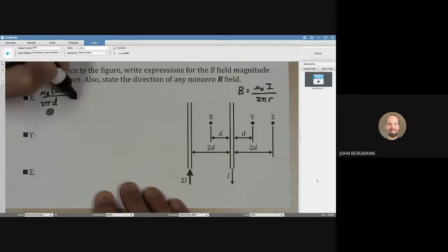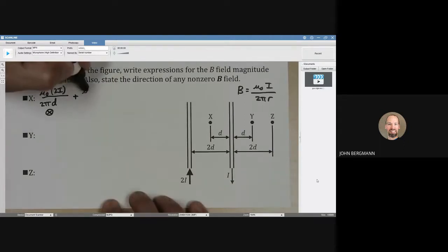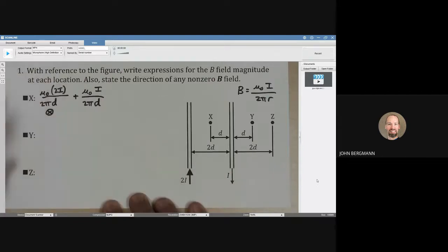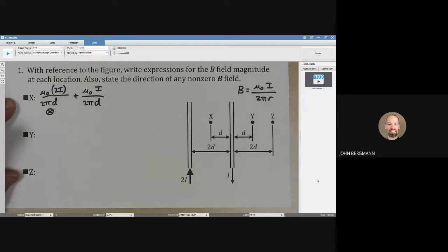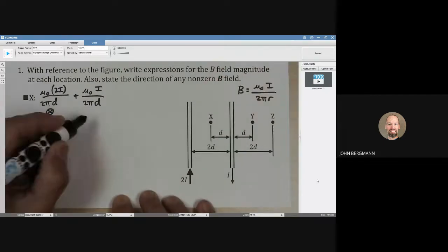In addition, we have a contribution from this current. That's going to be μ₀ times simply i this time, and we're going to divide by 2π. And what distance away is that? That's d. And in what direction does that act? Again, by our thumb-twist right-hand rule, you point your right thumb in the direction that the current is going, and your fingers point into the page. Both of these are into the page.